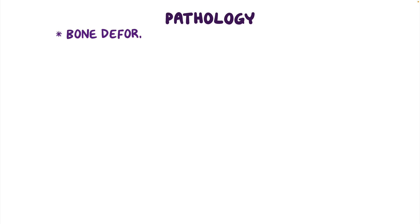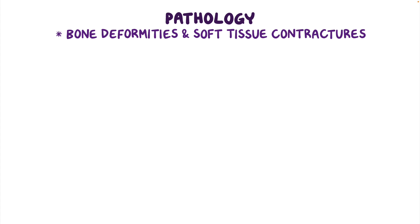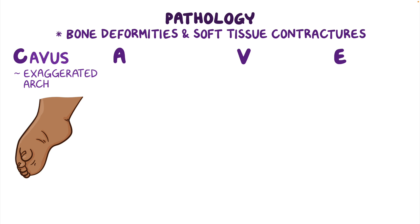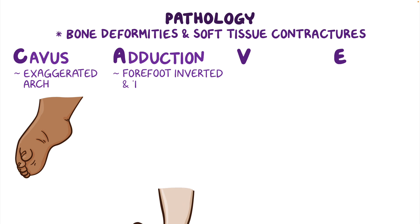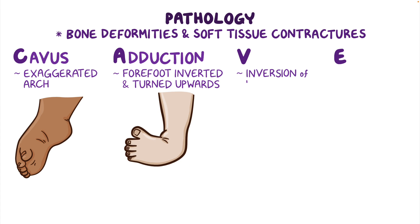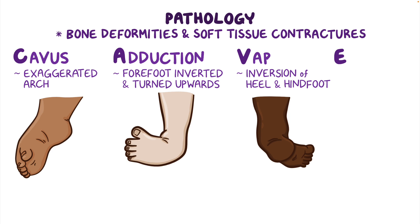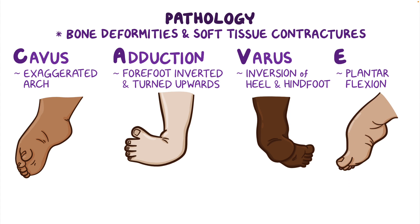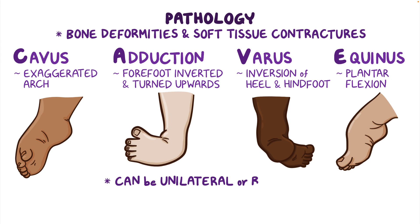When it comes to pathology, clubfoot is associated with bone deformities and soft tissue contractures. There are four main components, which can be remembered by the acronym CAVE. The first is an exaggerated arch, also known as cavus. Second, there is forefoot adduction with supination, meaning that the forefoot is inverted and turned upwards. Third, inversion of the heel and hindfoot, which is called talipes varus. Finally, there's plantar flexion of the foot, meaning the heel is raised and the ankle is in a pointed toe position, which is called talipes equinus. All these components together create clubfoot, which can be unilateral or bilateral.